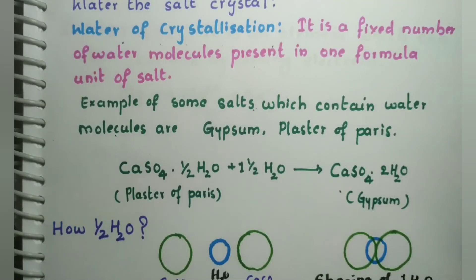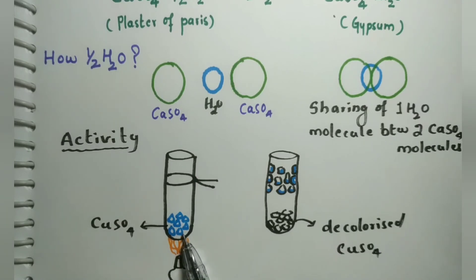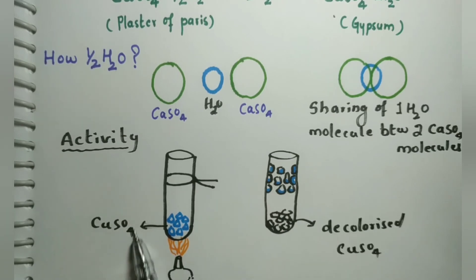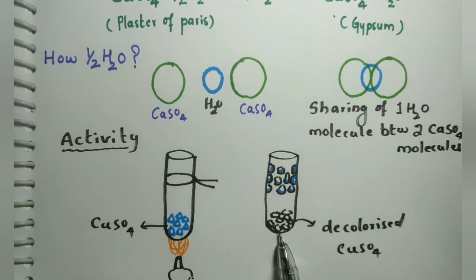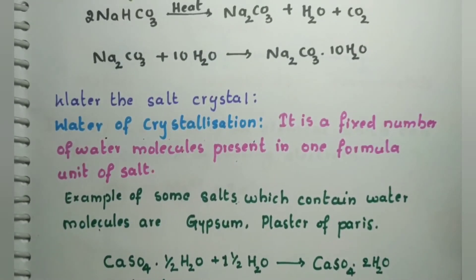Next we study water of crystallization. Let us do a small activity: copper sulfate, which is sky blue in color, is heated. It turns pale and water molecules appear on the inner surface of the test tube. When the decolorized copper sulfate is mixed with water again, the blue color reappears. This shows that salts contain some amount of water, which is called water of crystallization.